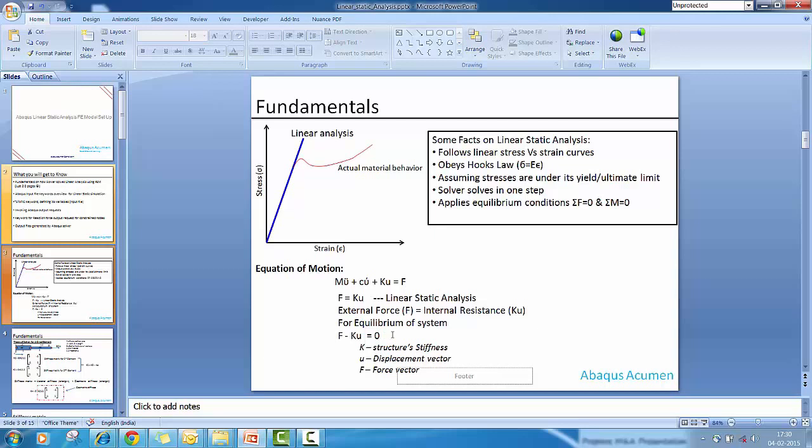For equilibrium condition, we need to have this external force F equal to internal resistance KU. As long as this equation is satisfied, your system is in equilibrium. When we have F minus KU, you can rearrange this which equals zero. We're solving for this when the system is in equilibrium, when all forces and moments equal zero. When that condition is satisfied, we have a solution in hand.